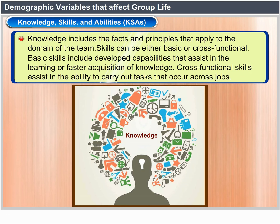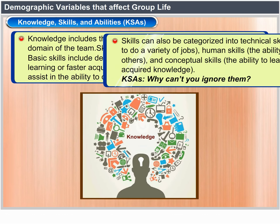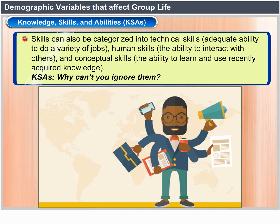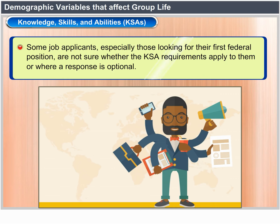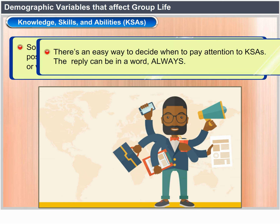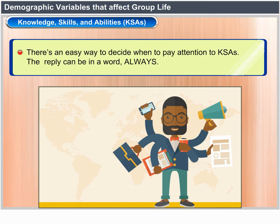Knowledge includes the facts and principles that apply to the domain of the team. Skills can be either basic or cross-functional. Basic skills include developed capabilities that assist in the learning or faster acquisition of knowledge. Cross-functional skills assist in the ability to carry out tasks that occur across jobs. Skills can also be categorized into technical skills — adequate ability to do a variety of jobs — human skills — the ability to interact with others — and conceptual skills — the ability to learn and use newly acquired knowledge. Some job applicants are not sure whether the KSA requirements apply to them; there is an easy way to decide: always pay attention to KSAs.